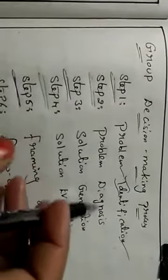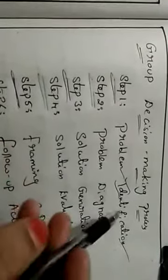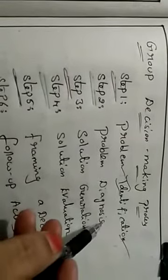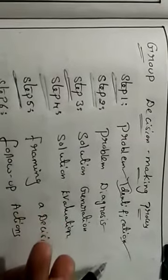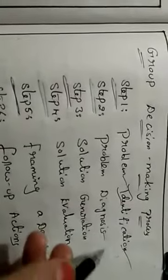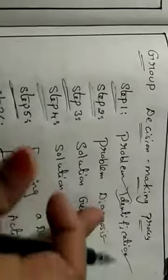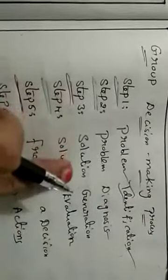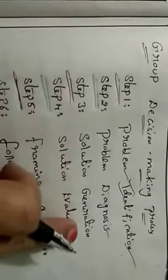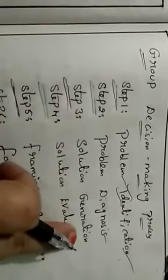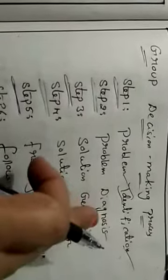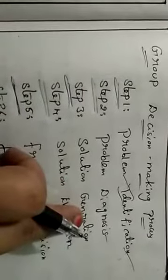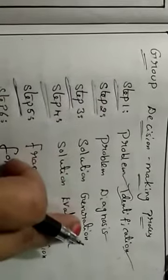The second step is problem diagnosis. On the basis of identification, we diagnose the causes and determine how to solve the problems. The third step is solution generation — on the basis of the problem, we generate the best possible solution.